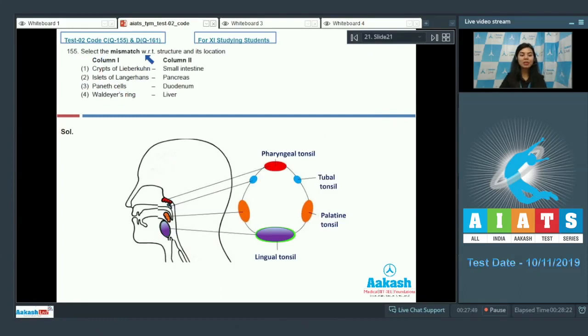Question 155: Select the mismatch with respect to structure and its location. Crypts of Lieberkühn found in small intestine—that is right. The islets of Langerhans found in pancreas—that is also right. Paneth cells found in duodenum—that is also right. And Waldyer's ring found in liver—that's incorrect. That's a mismatch.